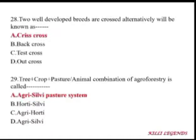A combination of trees, crops, pasture, and animals in agroforestry is called agro-silvipasture system. When pasture comes into the picture it is a pasture system; when trees come into the picture it is silviculture. In agro-silvipasture, 'silvi' denotes trees.